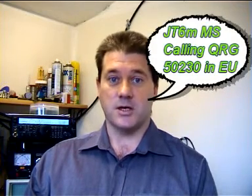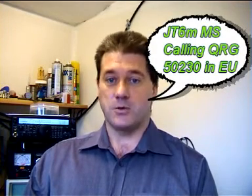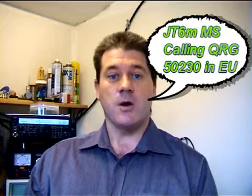Meteor scatter and ionoscatter on 6m are, of course, the principal modes of propagation, which is used with JT6M. However, it is also not uncommon to see the mode used with sporadic E and F2 under marginal conditions. Of course, the mode could be used under much stronger conditions also. However, for the length of time that it would take to complete a QSO, it is probably not worth the effort.